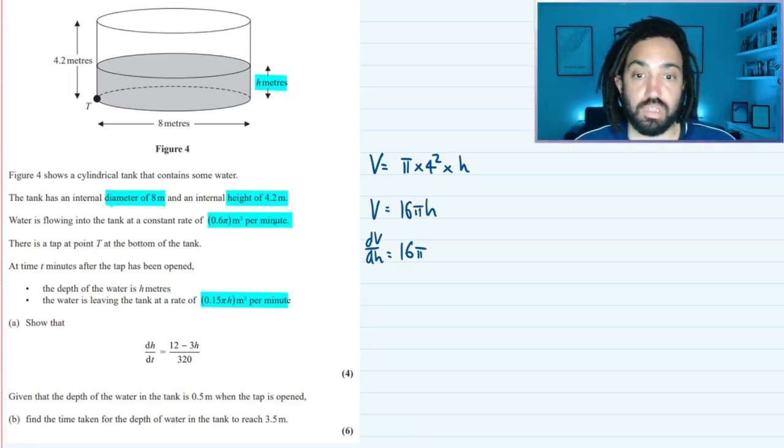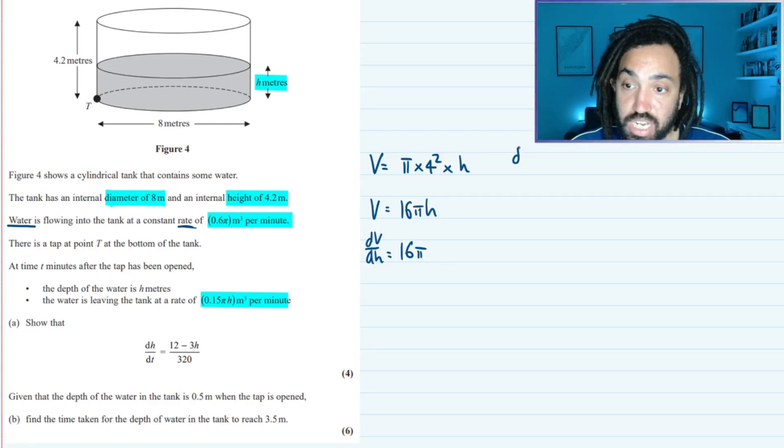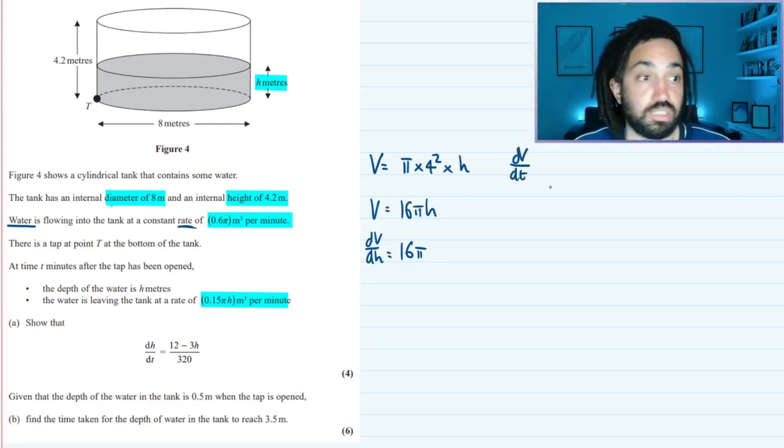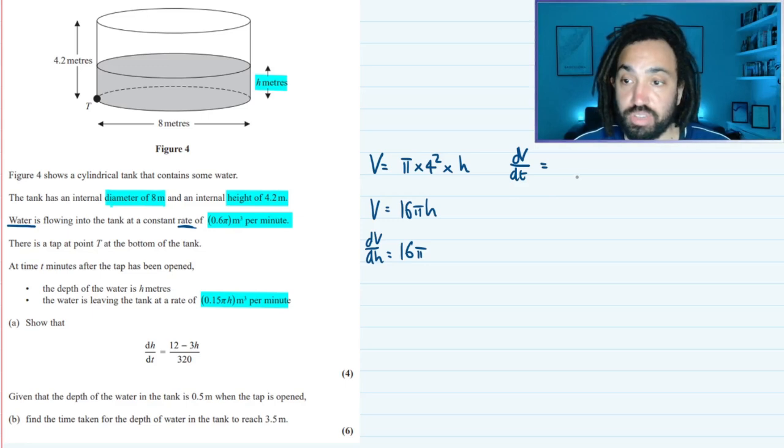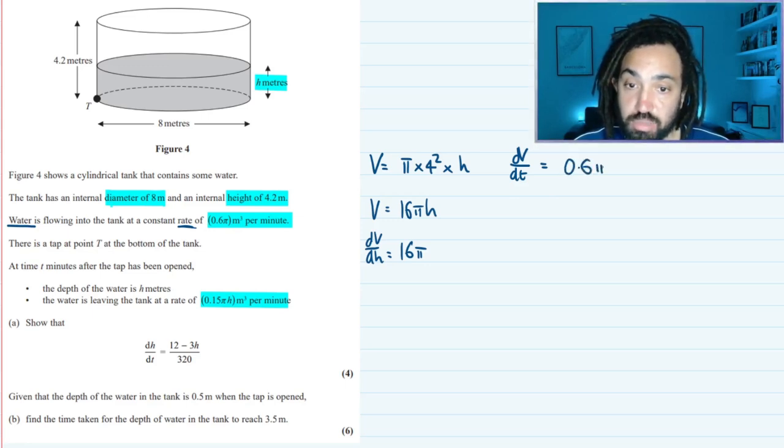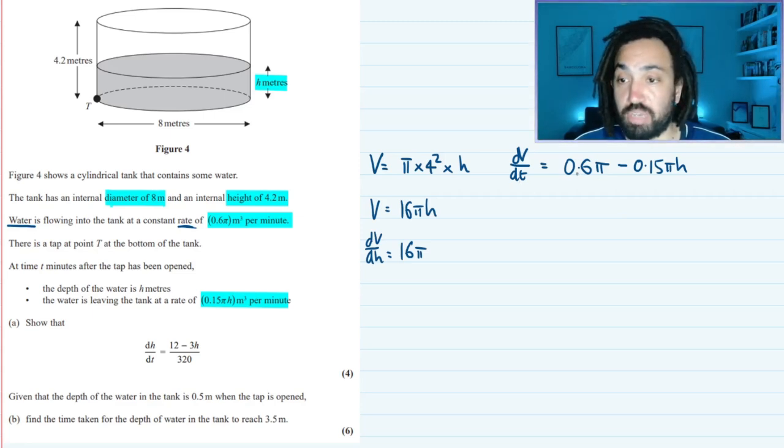We also know the rate at which water volume is flowing in. Rate means with respect to time. So I can write that the change in the volume with respect to time is equal to, well we've got 0.6π coming in so that's positive, but we've also got something leaving as well so minus 0.15πh because it's leaving. So dV/dt = 0.6π - 0.15πh because we've got this coming in and that coming out.